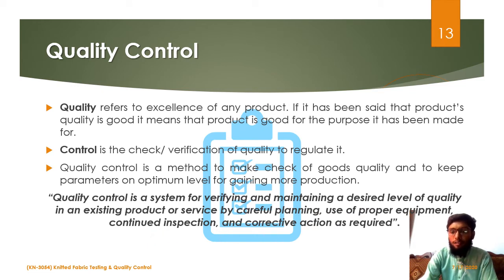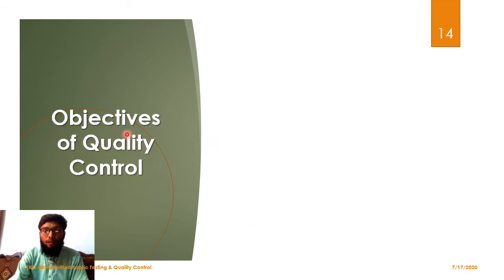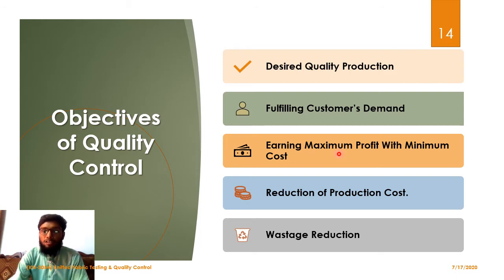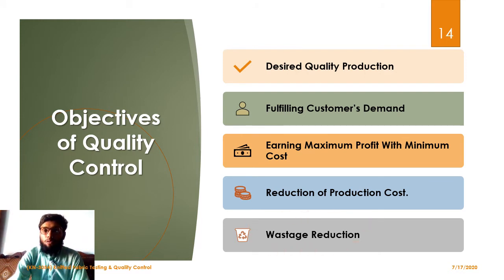Objectives of quality control: the first one is desired quality production — we want to manufacture products with our desired quality. Then fulfilling the customer's demand, which is always fulfilled by quality products. Then earning maximum profit with minimum cost — if products are of good quality, profit will be maximum with minimum losses. Finally, reduction of production cost — if the quality of a production floor is maintained at a good level, production cost will be reduced due to fewer faults, and if faults are reduced, wastage will also be reduced and the industry will go into profit.